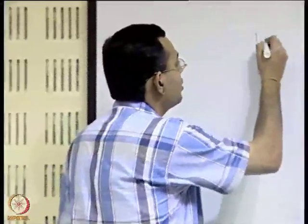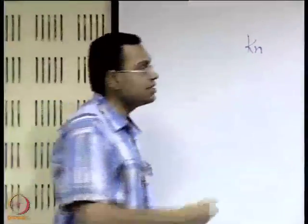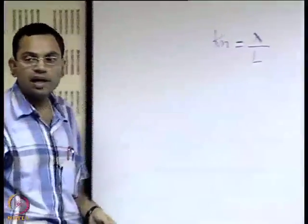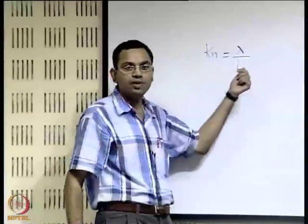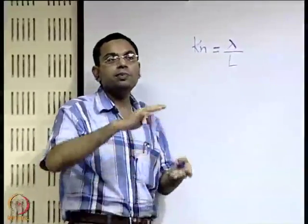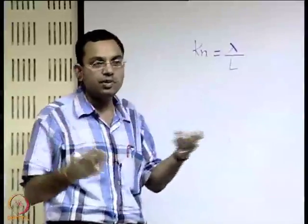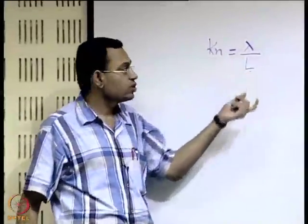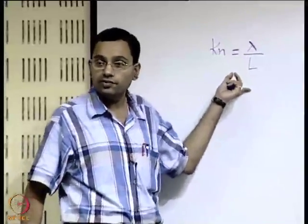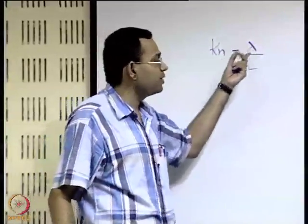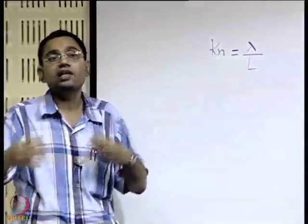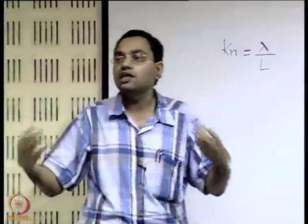What we left last time was the definition of the Knudsen number, which is the ratio of the molecular mean free path to the characteristic length scale of the system. For a pipe it may be the diameter of the pipe, for something else it may be some other dimension. If this ratio is small, it indicates that the mean free path is much smaller than the characteristic length scale, which implicitly tells that it is a sufficiently densely packed system.